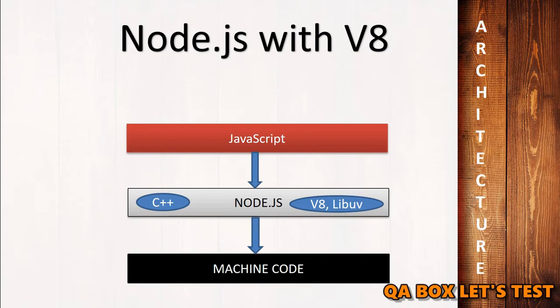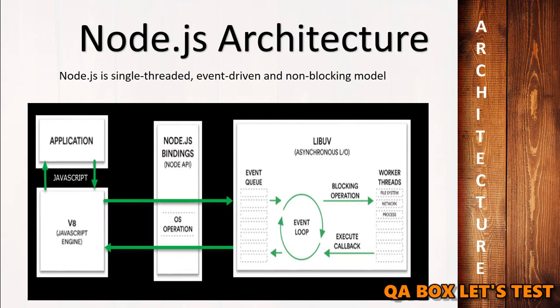Having said that, some of the web APIs for the browser such as window and document are not implemented. You may also come across the statement that Node.js is a single-threaded, event-driven and non-blocking model. Let's understand this as well. So what is non-blocking?